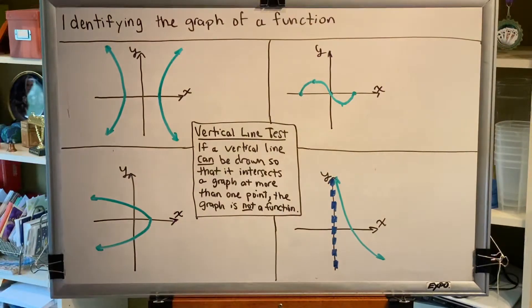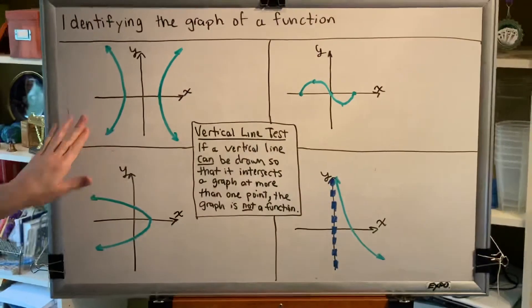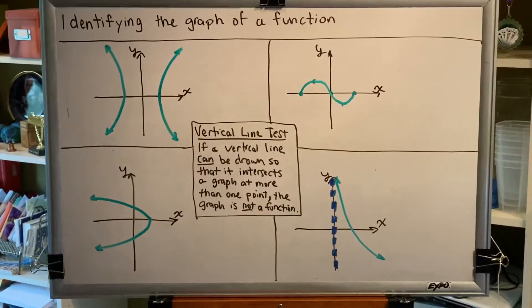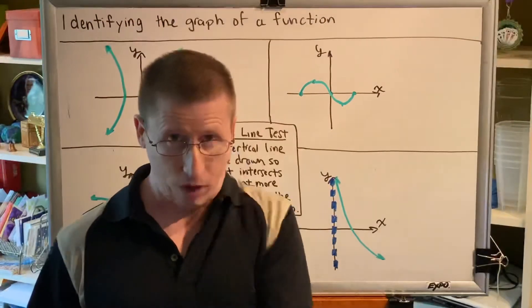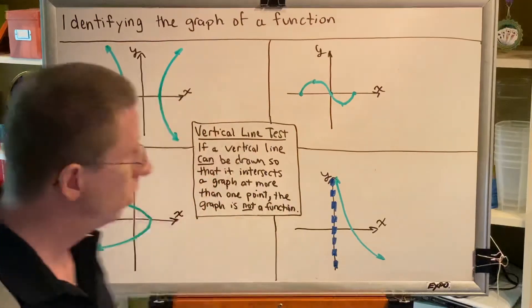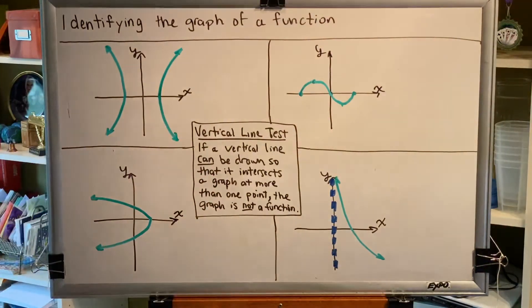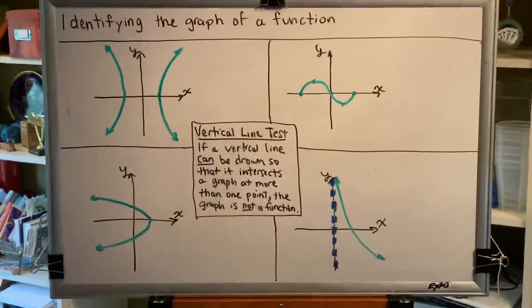Let's see if we can apply that vertical line test to the graph of this relation. We want to try to draw a vertical line—vertical, right, that means straight up and down. It has to be vertical that will intersect this green curve at more than one point.